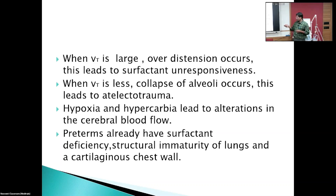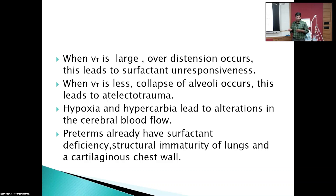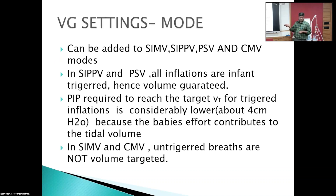Preterm infants are already surfactant-deficient with structural immaturity of the lung and cartilage in the chest wall. When there is wide fluctuation in tidal volume — when it is very large there is overdistension causing surfactant inefficiency, and when tidal volume is less the alveoli collapse, losing FRC — this leads to atelectotrauma, hypoxia, and hypercarbia, resulting in alteration of cerebral blood flow and long-term complications.